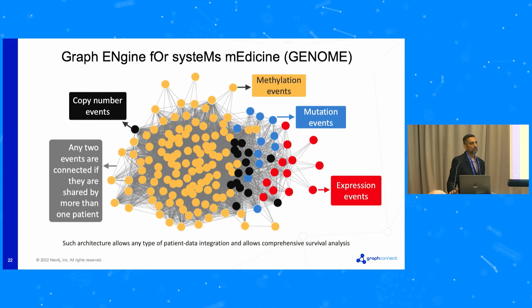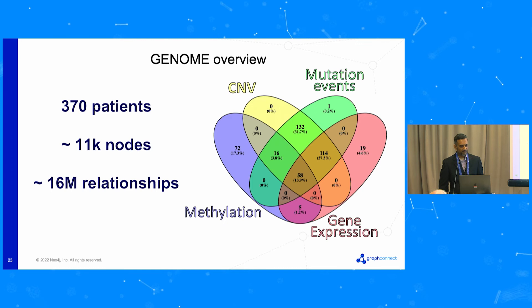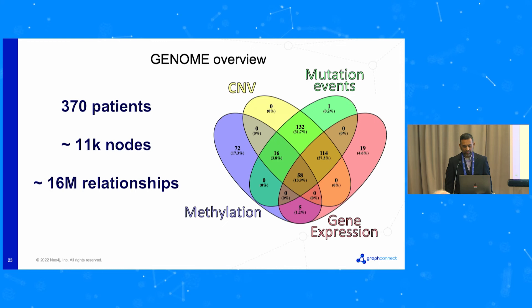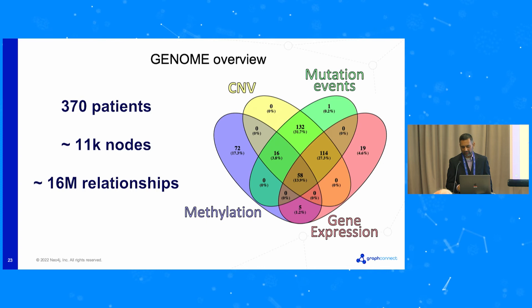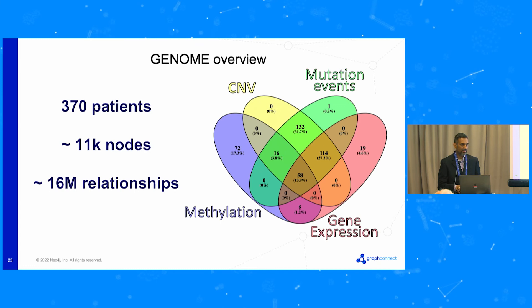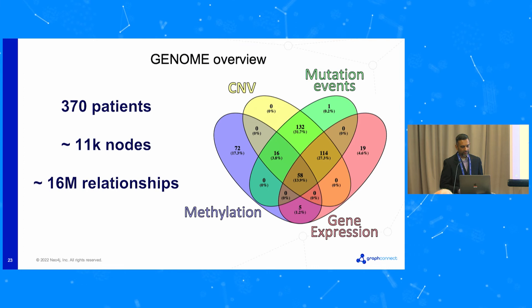Right now the threshold is two or more patients sharing an event. Our database contains about 370 patients, with about 11,000 nodes and 16 million relationships. This is a Venn diagram of mutation, copy number, gene expression, and methylation events. About 13% of patients have all the data. The good thing is that you can integrate any data that is available — it's not necessary that all patients have all data types.